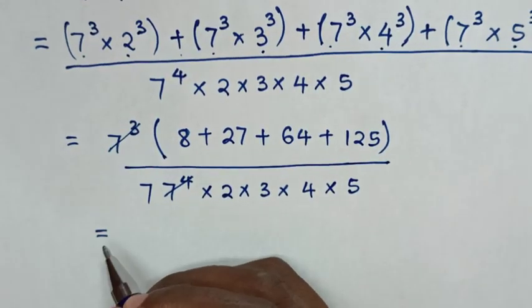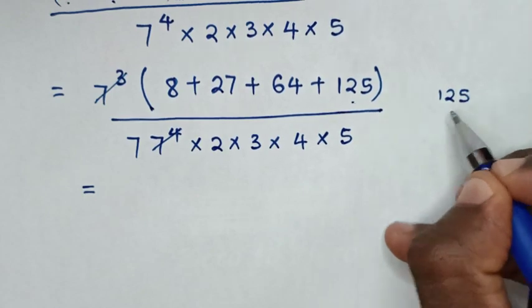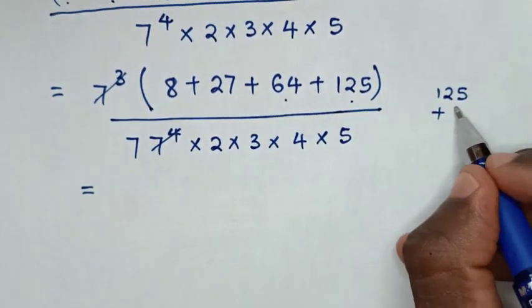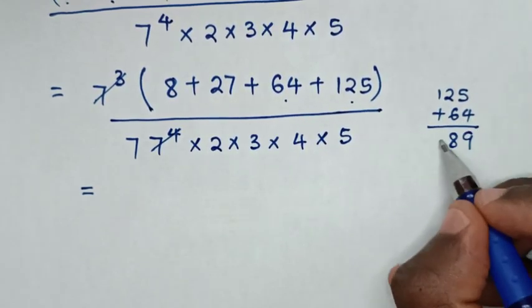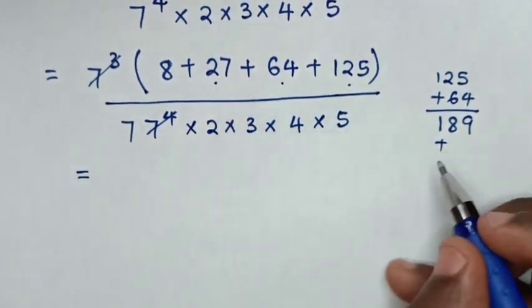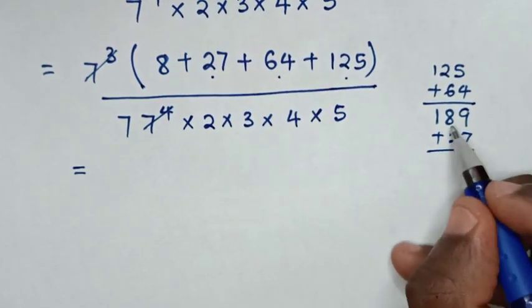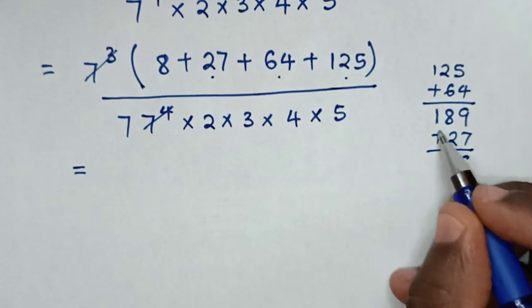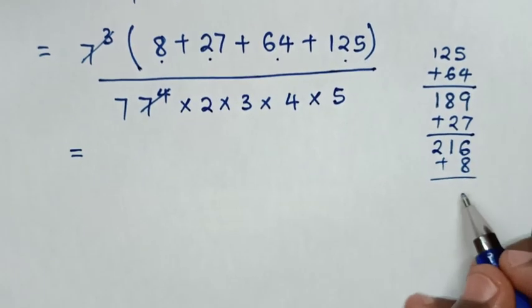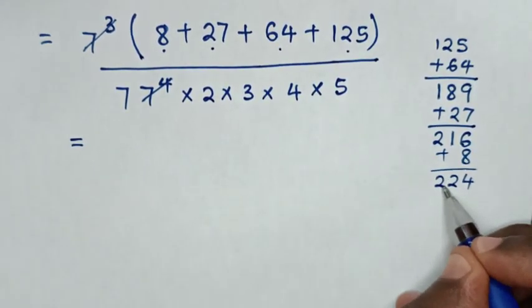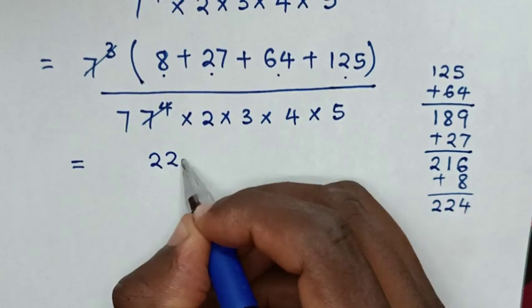So it will be equal to the sum: 125 plus 64 plus 27 plus 8. Adding these: 125 plus 64 is 189, plus 27 is 216, plus 8 gives a total of 224.